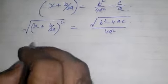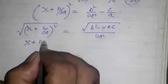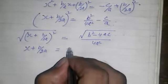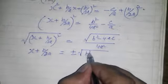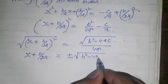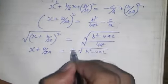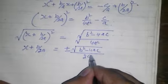Now this is a complete square, so x + B/2A = ±√(B² - 4AC) / 2A.